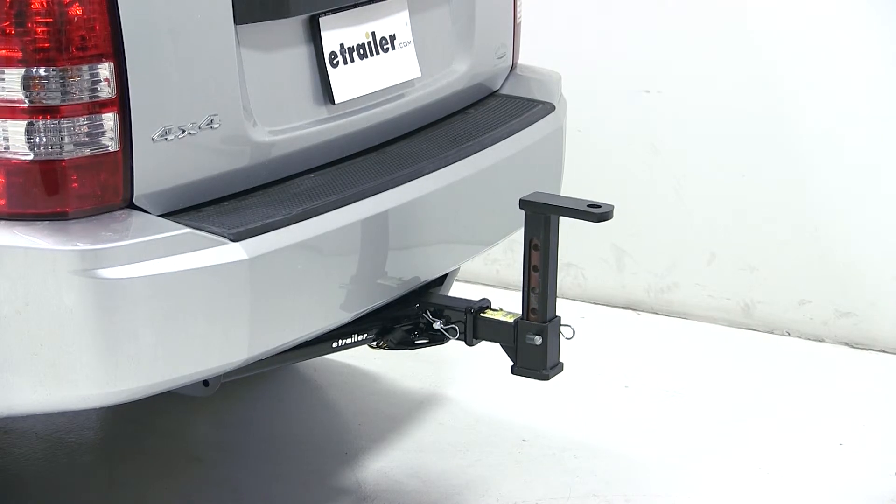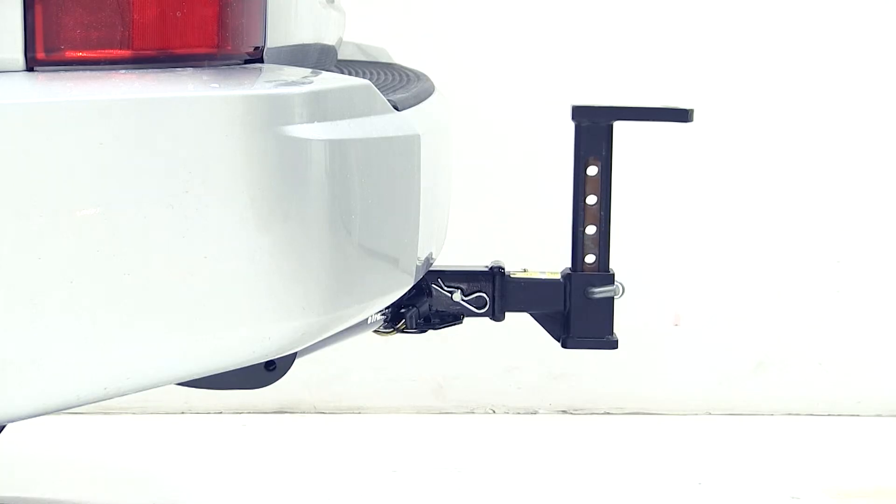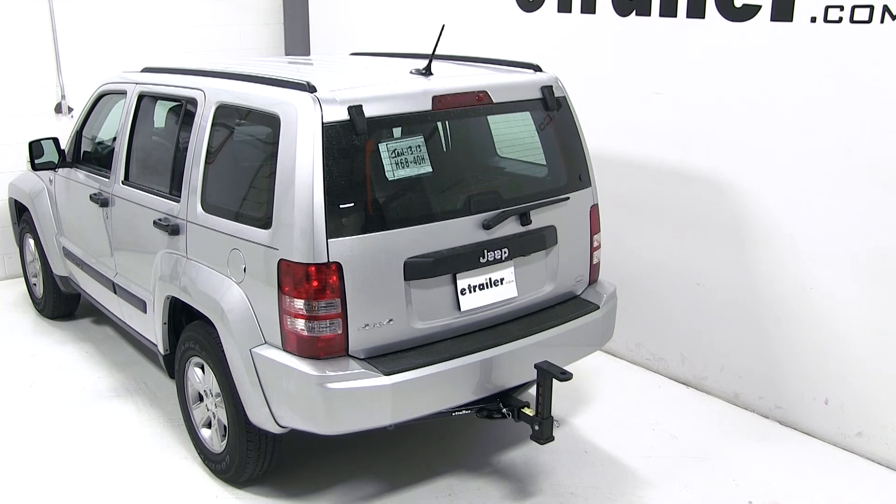Now this ball mount will adjust between these two measurements by 1.5 inch increments. And that will complete our test fit of the convertible dual cushioned adjustable ball mount, part number CAB-UM on our 2012 Jeep Liberty.